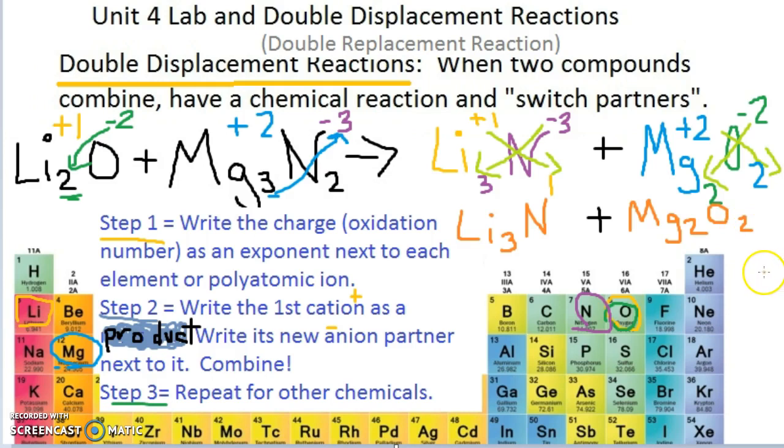Now, technically, we can reduce. So, if I have 2 divided by 2, what does that equal? 2 divided by 2 equals 1. So, since I have two of both of these, I can reduce it and say MgO. And so, my final answer would be Li3N plus MgO. Lithium nitride plus magnesium oxide. Remember, we changed the endings to -ide.